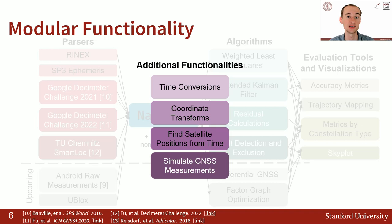Additionally, as the backbone to get those previous functionalities working, we have time conversions and coordinate transforms, finding the positions of satellites — everything that you would expect a Python GNSS library to have.